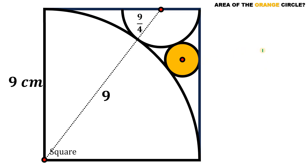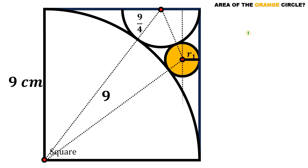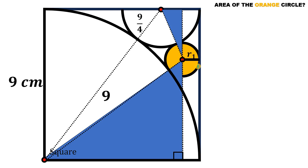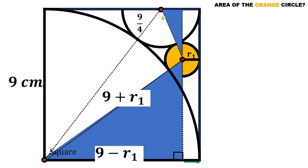Now we are ready to find the radius of this orange circle. Let's call this R₁. To find R₁, let's connect the centers of the semicircle, quarter circle, and the orange circle. The hypotenuse of the big right triangle equals 9 + R₁, and one of its legs equals 9 − R₁. In the upper right triangle, one leg is 9/4 − R₁, and the hypotenuse is 9/4 + R₁.